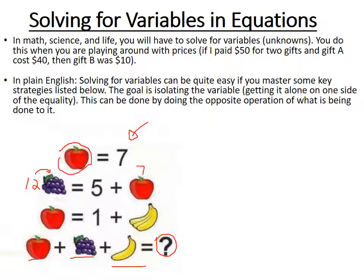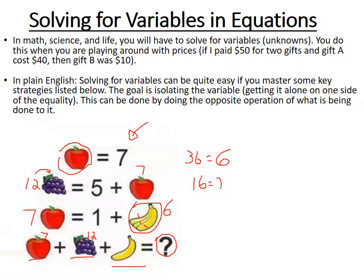Continuing the puzzle: one plus the bananas equals the apple, and the apple is seven, so the bananas equal six. But look carefully — there were three bananas shown, so three bananas equals six, meaning one banana equals two. You could do that in your head saying two plus two plus two is six, or six divided by three. What you did there was solving for variables. So now: seven plus twelve is nineteen, plus two is twenty-one — the final answer is twenty-one.